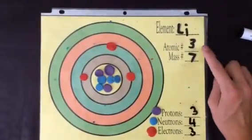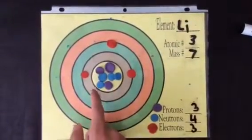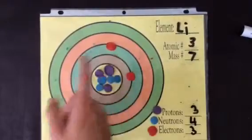Lithium-7 has an atomic number of 3, atomic mass of 7, 3 protons, 4 neutrons, and finally 3 electrons.